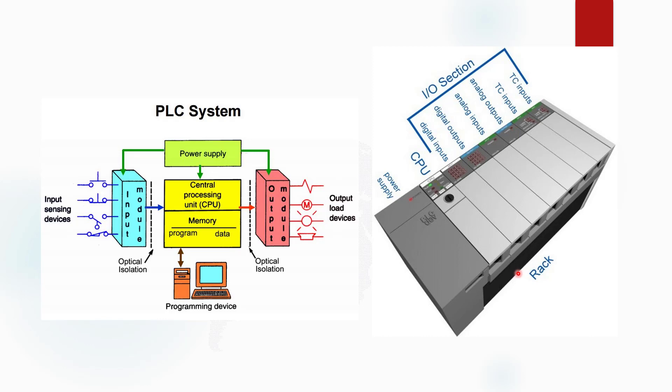This is called the rack. The rack is basically used to extend the input-output capability of the PLC system — here we put input or output cards. This is the basic comparison between the actual PLC and the block diagram of PLC. In upcoming videos, I will explain this block diagram and the PLC model in detail.